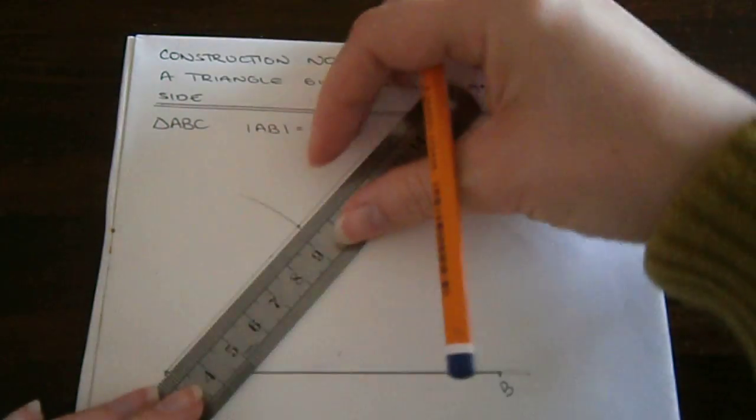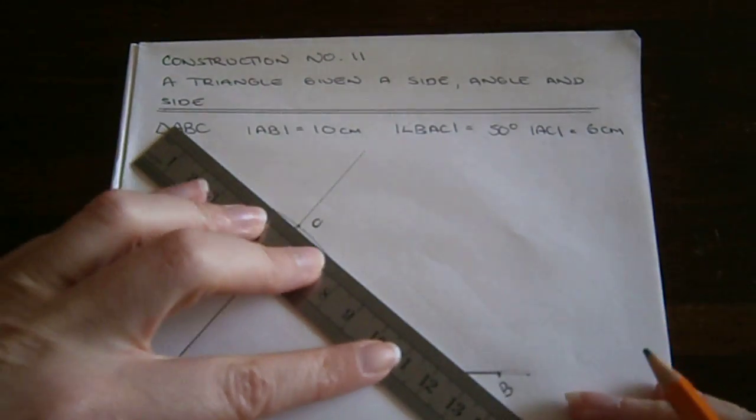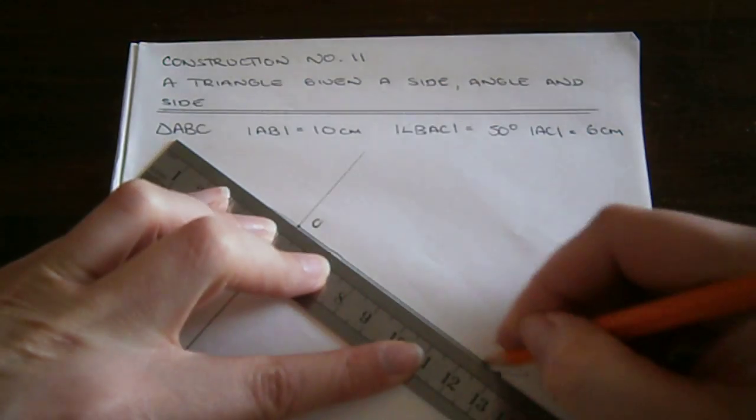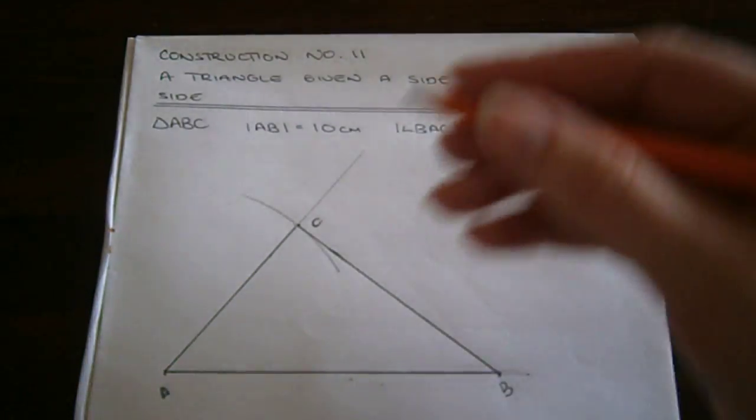With my ruler, I draw straight edges from A to C and C to B. Don't forget to mark the dimensions.